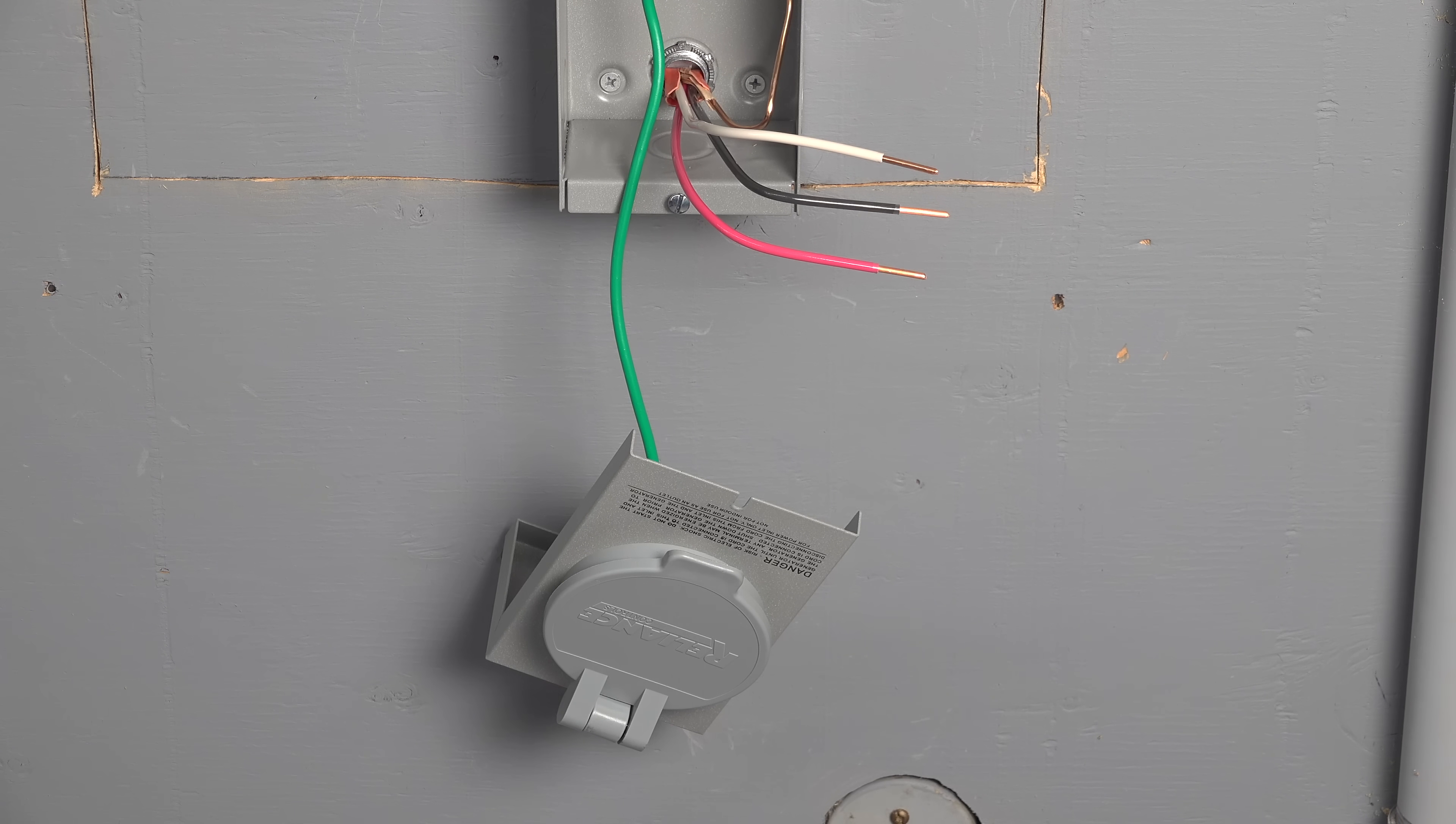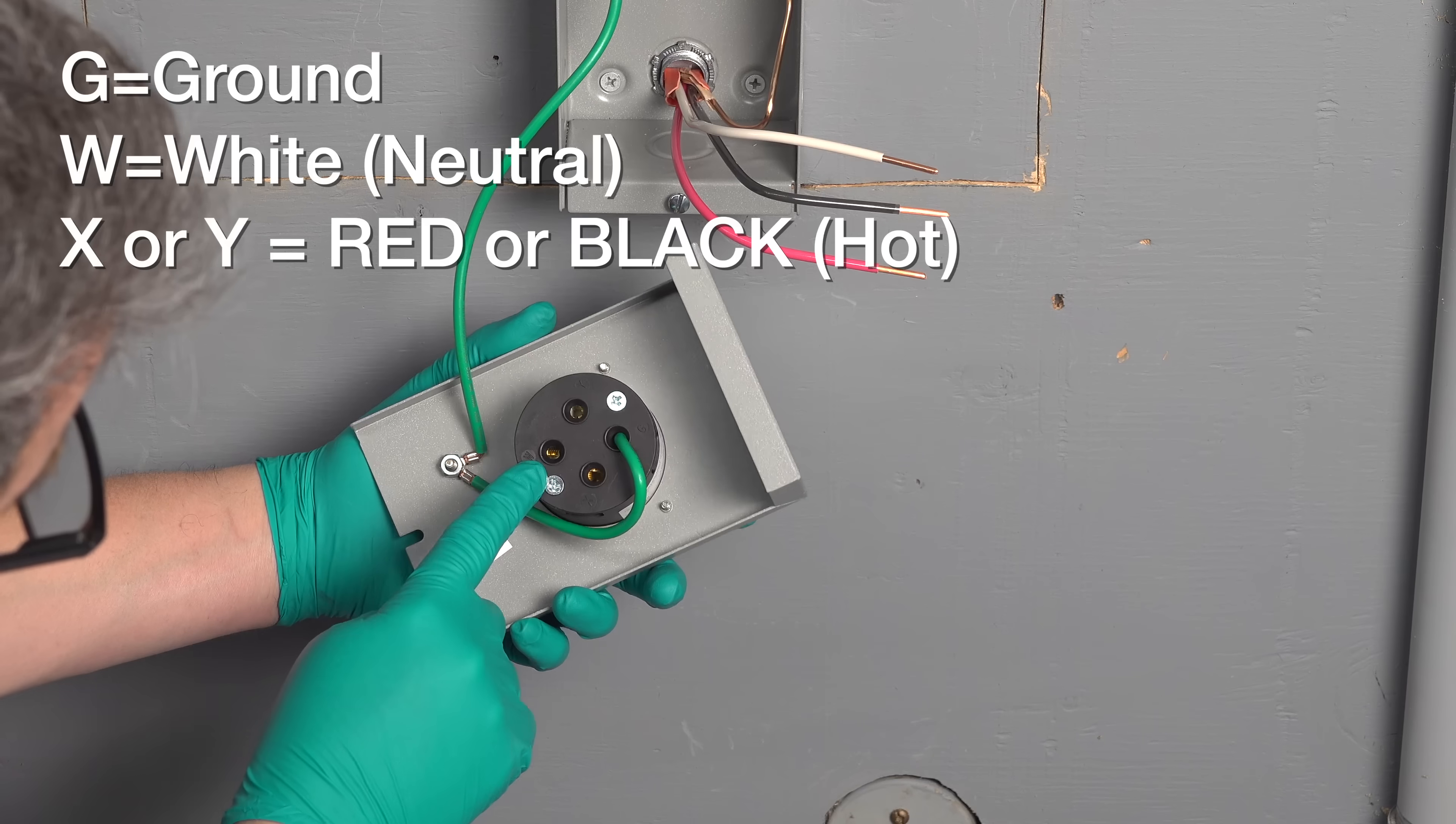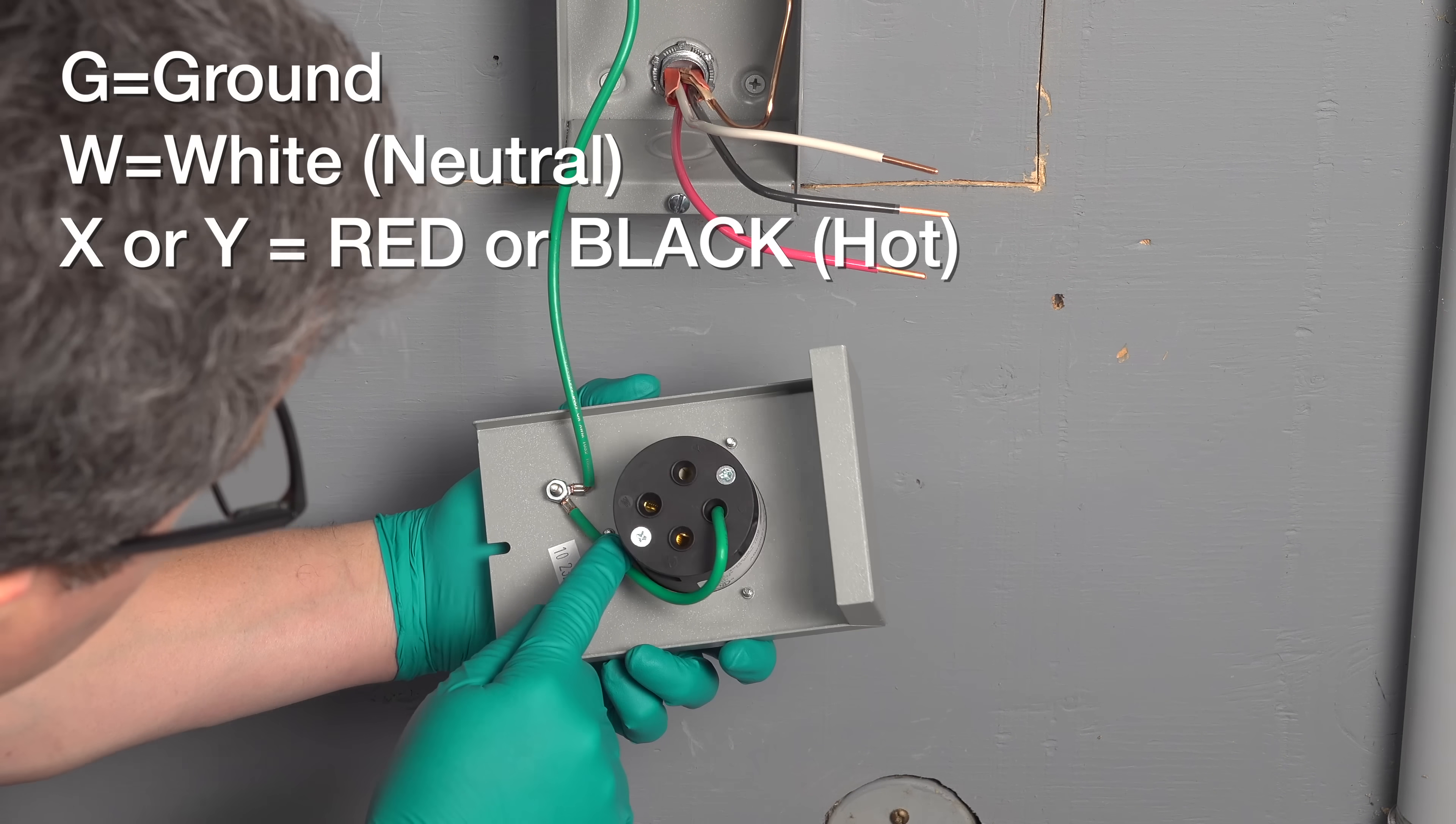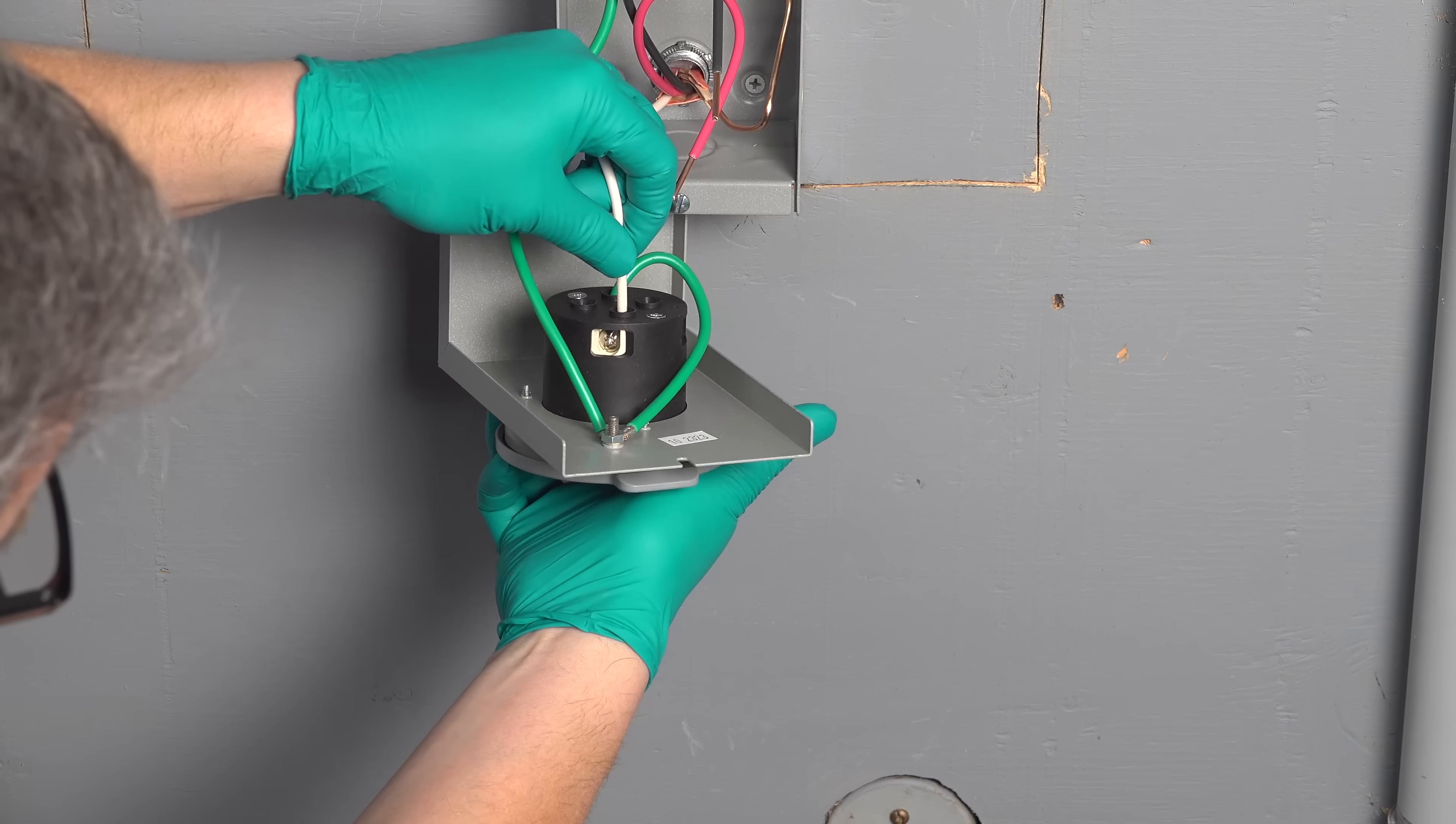The black and the red are considered identical electrically. They are both hot wires. When you look at the back of the inlet, there is one hole that's labeled W, and that of course is for the white, but then you've got an X and a Y. Those are the standard designations on this model for both of the hot wires, and it does not matter which one of them gets the red or the black. You'll just want to make certain that you get the white into the W terminal.